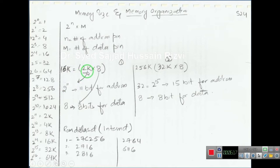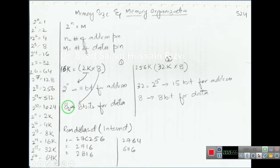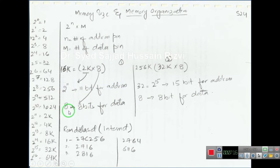If n is 11, this becomes 2K — so this is the number of address bits, meaning this memory has 11 bits for address and 8 bits for data (m is number of data bits). A 16K memory can also be organized as 4K by 4 — again 16K — where 4K means 2 raised to the power 12, so 12 bits are reserved for address and 4 bits for data. It can also be written as 8K by 2 — again 16K — where 8K means 2 raised to the power 13, so 13 bits are for address and 2 bits are for data.